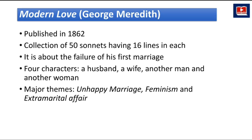The next one is 'Modern Love,' the sonnet sequence written by George Meredith, published in 1862. It is a collection of 50 sonnets, each having 16 lines, about the failure of his first marriage. There are four different characters: a husband, a wife, another man, and another woman. The major themes of these sonnets are unhappy marriage, feminism, and extramarital affairs.